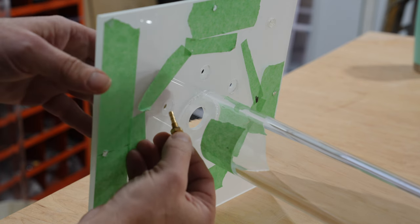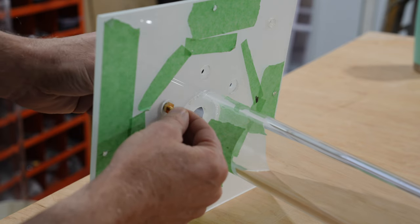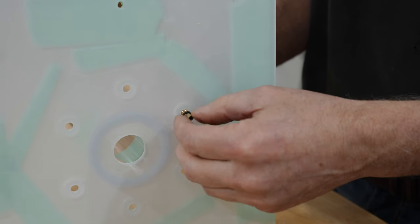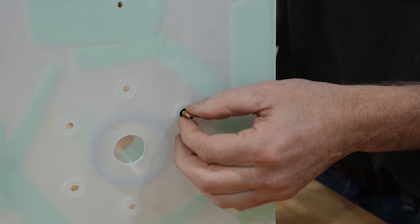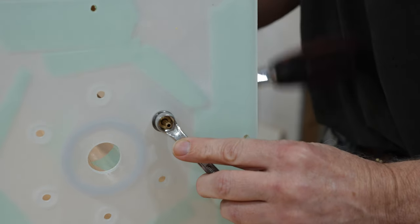Now I will be adding the bulkheads. To ensure a good seal, I use an O-ring on both the top and bottom side of the plate. I then add a washer before tightening the bulkhead in place.